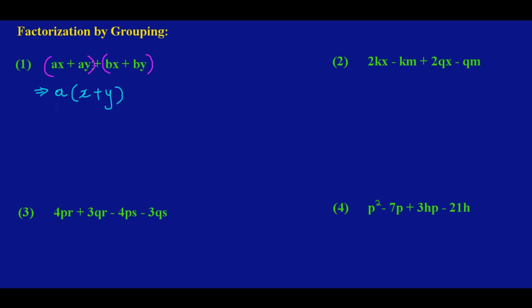I bring down the plus sign from between the groups. Now I find what is common to bX and bY. I have 'b' here and 'b' there, so I take out my b, open brackets, and say: b into bX leaves X. Then, respecting my positive sign, b into bY leaves Y. I close the bracket.